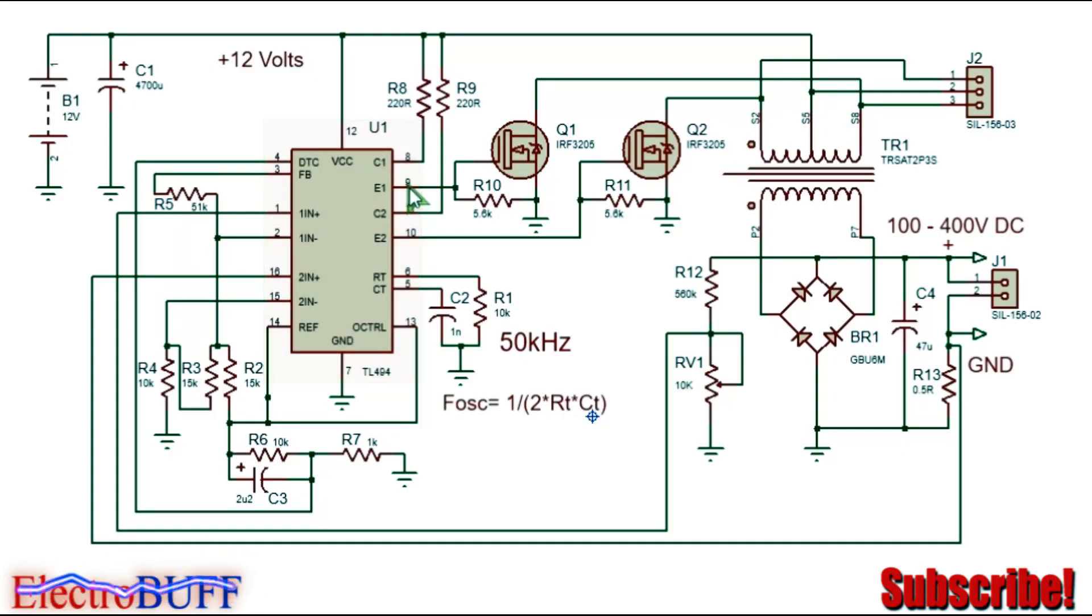Current will flow from the 12 volts rail through the first half primary winding, through the MOSFET into ground. When it turns off and the second output transistor conducts, the second MOSFET will be turned on and current will flow through the other way in the primary winding into ground.